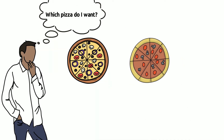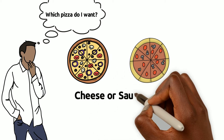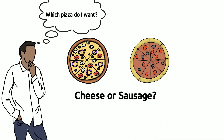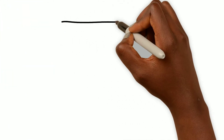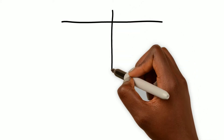Next, we identify the choices. In this example, it's pretty simple — you have cheese or sausage pizza. Now we need to evaluate the advantages and disadvantages of each choice — basically, make a list of the pros and cons of each.